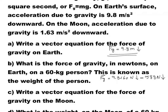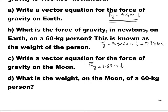Part C says: write a vector equation for the force of gravity on the moon. So the vector f_g is going to be 1.63 times the mass, again downward. And the last part says: what is the weight, which is the force of gravity on the moon, of a 60 kg person? So f_g is going to be 1.63 times 60 Newtons downward, which if we simplify is going to be 97.8 Newtons downward.